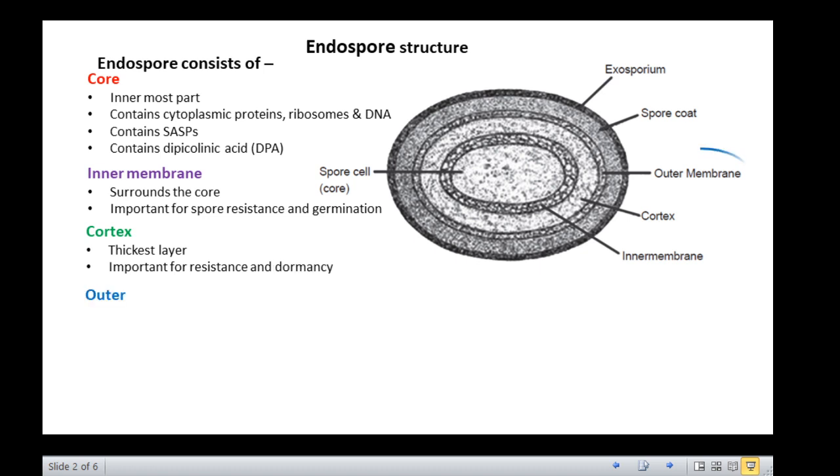The next layer is the outer membrane. Around the cortex lies the outer membrane, which has a polarity opposite to that of the inner membrane. Probably, it may have a function only during spore formation. Surrounding the outer membrane is the coat. The coat is composed of a keratin-like protein. The impermeability of this layer confers on spores their relative resistance to antibacterial chemical agents.